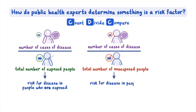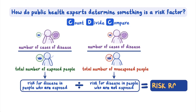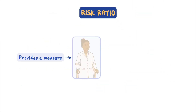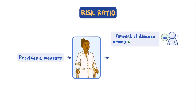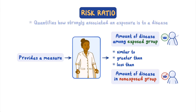This is the risk for disease in people who are not exposed — for example, the risk for lung cancer among non-smokers. Finally, they compare these risks by dividing the risk among the exposed group by the risk among the unexposed group. This comparison is called the risk ratio. The risk ratio provides a measure so experts can see if the amount of disease among the exposed group is similar to, greater than, or less than the amount of disease in the non-exposed group. The risk ratio also quantifies how strongly associated an exposure, or having a particular factor, is to a disease.